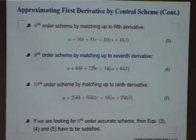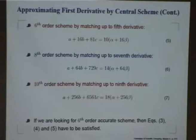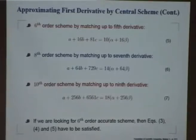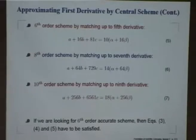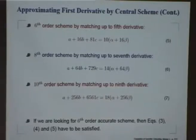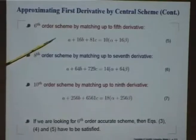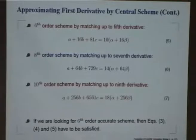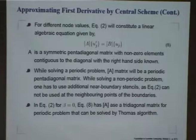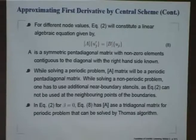We have five unknowns: a, b, c, alpha, and beta. At most, we could satisfy all five equations — five equations, five unknowns — and get a unique tenth-order scheme. However, if we decide to go for a sixth-order scheme, we would solve three equations: for the first derivative, the third derivative, and the fifth derivative. We have three equations for those coefficients. Let us try to see what we do operationally — not just in analysis mode, but what we actually do in computing. On the left-hand side, you have the unknown derivatives written as a vector multiplied by a matrix A, and the coefficients of the function form matrix B.